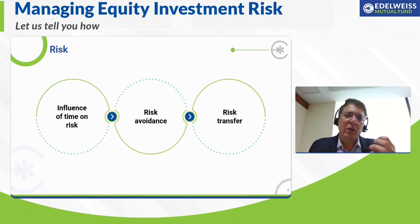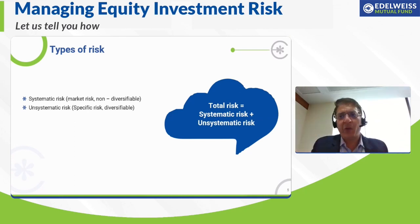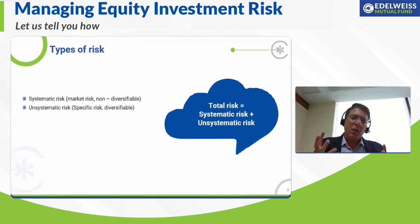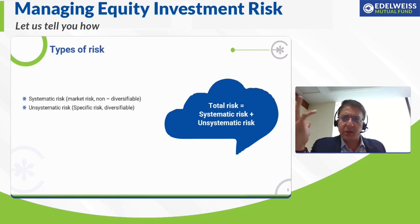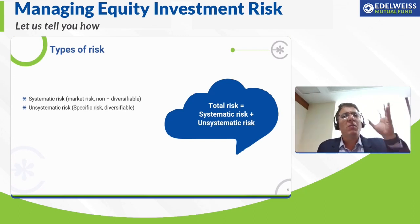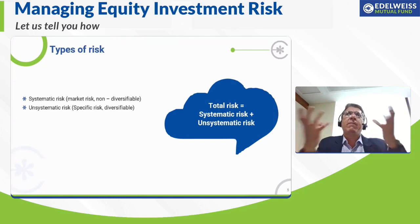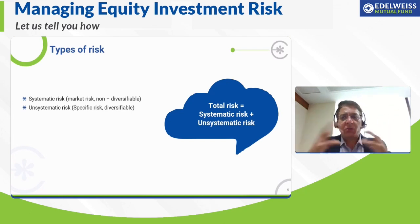When we talk of risk in the investment cycle, there are two types of risk that investments get exposed to. One is market risk or systematic risk — whenever I'm investing in any security, that security is part of a market. If the market falls, there is a probability that my security may also correct. It may correct less or more, but there may be a higher probability of it correcting if the overall breadth of the market is on a negative bias. This is known as systematic or market risk, and it is non-diversifiable.